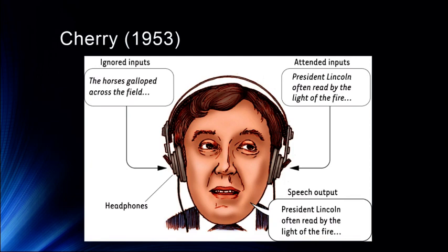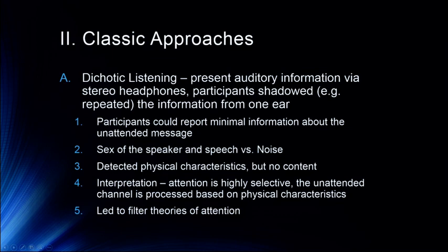So here, they're attending to the left ear — for example, 'President Lincoln often read by the light of the fire' — and that's what the participant is shadowing. Then he's ignoring the input in his right ear. What the studies in this area found is that participants could report very minimal information about the unattended message. The best way to sum up what participants could do is they could tell information about the physical aspects of that ignored stimulus. They could tell the sex of the speaker and whether it was speech versus noise. But really very little else. They couldn't detect what language it was, couldn't tell the difference between forward speech and backward speech, and couldn't report one word that was repeated over and over again.